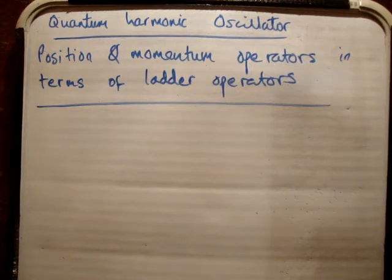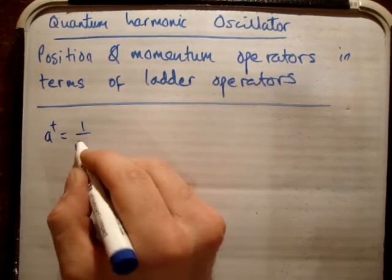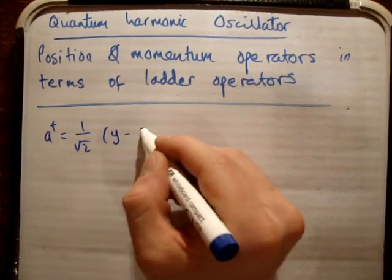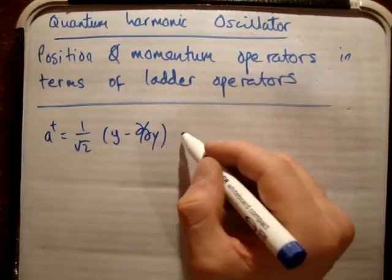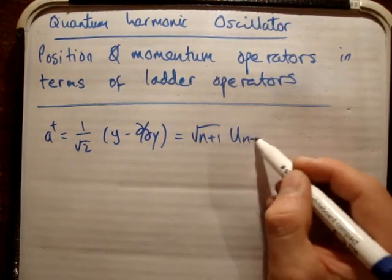At this stage, I've shown you the ladder operators A plus and A minus, and I've put them in different ways. For example, we've seen that A plus is equal to 1 over root 2, Y minus dY/di. Or another way of writing that is equal to root N plus 1 times U N plus 1.